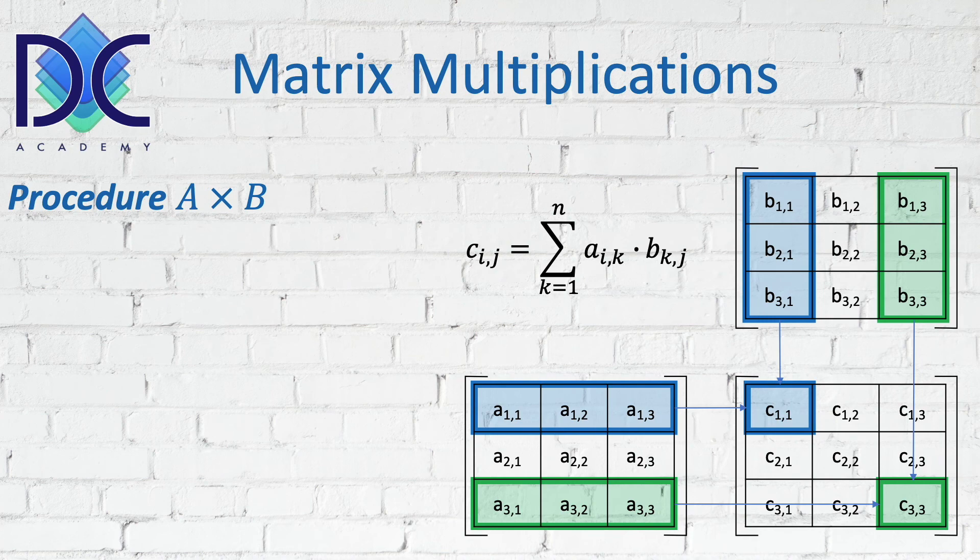Basically, what we have as a matrix calculation: in order to find C11, we have to multiply A11 with B11, plus A12 multiplied with B21, plus A13 multiplied by B31. So basically, these are the calculations that we have to do for every element of the new matrix.